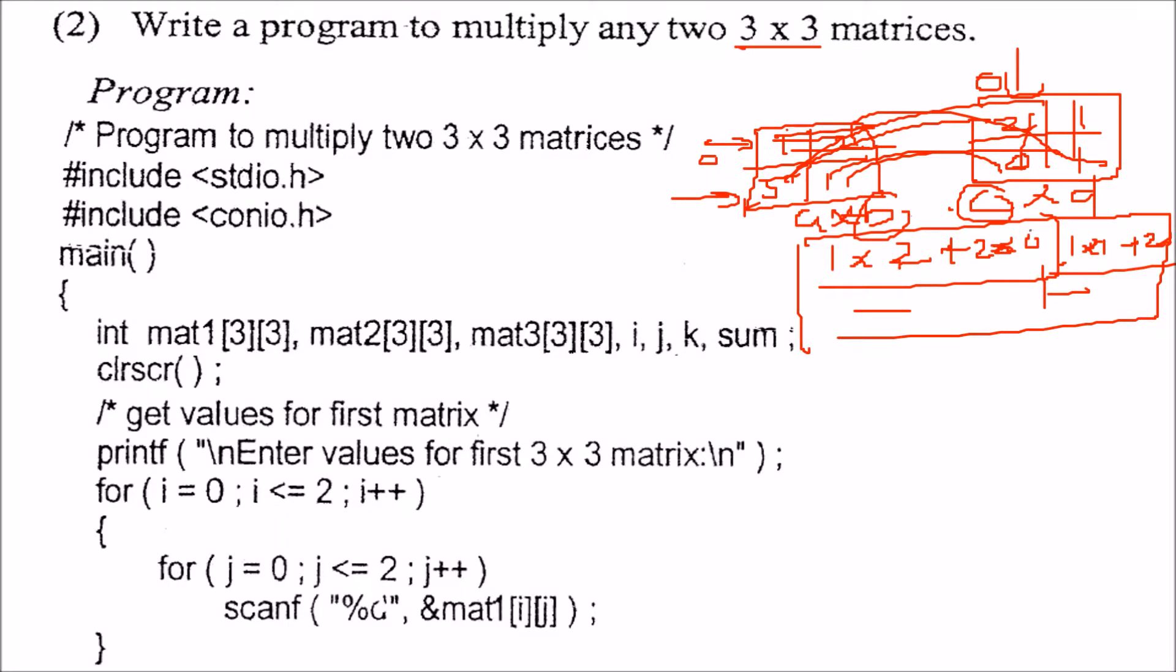this B has to be equal to C. The column of first matrix has to be equal to the row of the second matrix. This has to be made very clear. Now, these two are equal, we will have a variable K. We will introduce a variable that way.